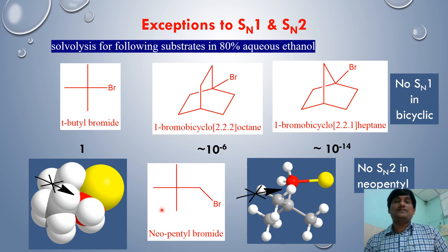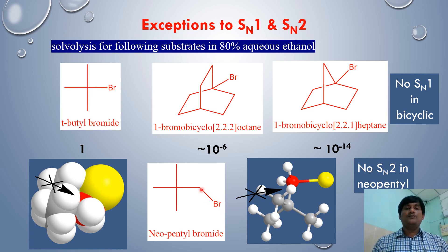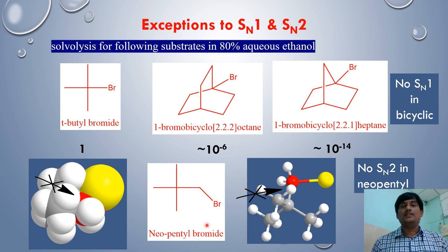SN2 reactions are typically exhibited by primary alkyl halides. However, neopentyl bromide, although a primary halide, cannot undergo SN2. The reaction center carbon is attached to a very bulky tert-butyl group, which hinders the approach of the nucleophile to the reaction center. As clearly seen in the structural picture, the reaction center is blocked by this highly bulky group, preventing SN2.